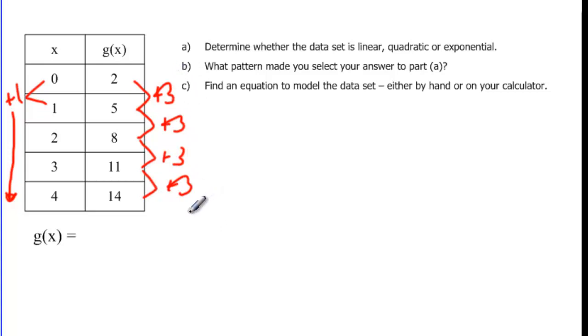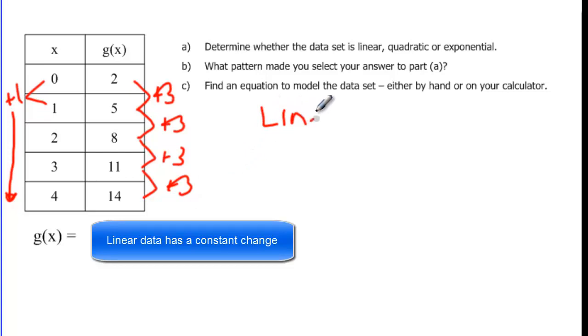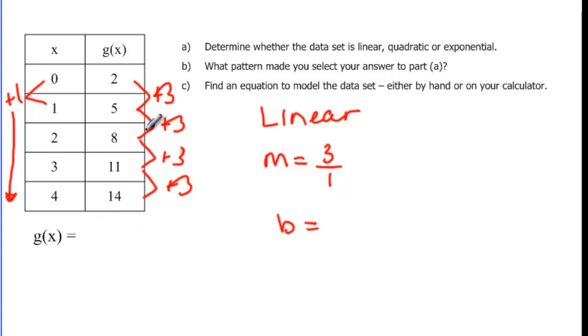So when you add the same thing a consistent amount every time, that's going to be a linear function. With linear functions, if x changed by one that makes it really nice, because my slope, even if it hadn't changed by one, as long as it's changing by a consistent thing as well as my y is changing by a consistent thing. Remember it's the difference of the y's, so that's a three, over the difference of the x's, which in this case is just one. So my slope is three, and then I just need to know my y-intercept. This table told me when x is zero that my y-intercept is two. So then I can write g of x is equal to three, my slope, times x plus my b, which is two.